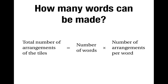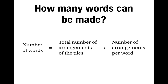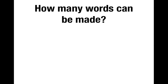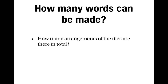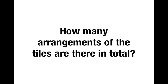The total number of arrangements of the tiles is the number of words times the number of arrangements per word. Put a different way, the number of words is equal to the total number of arrangements of the tiles divided by the number of arrangements per word. So in order to answer how many words can be made, we need to ask two questions: how many arrangements of the tiles are there, and how many arrangements are there per word?